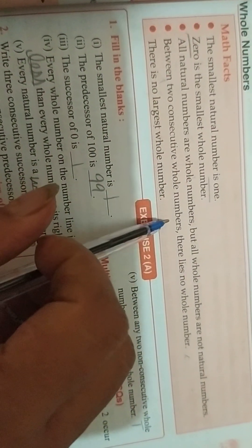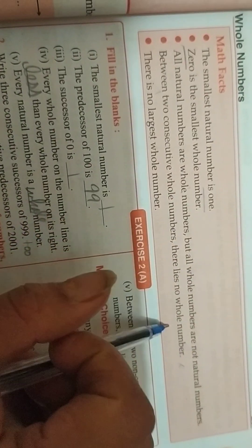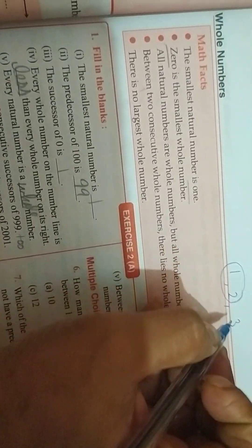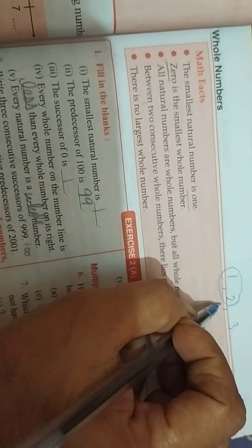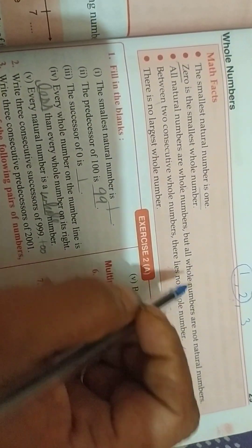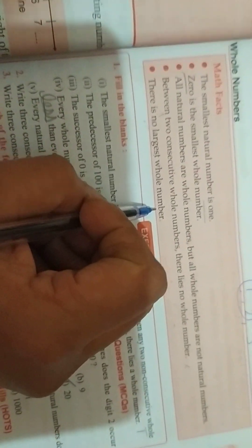But all whole are not natural. Between any 2 consecutive numbers there lies no whole number. It means, suppose we are having 1, 2, 3. So consecutive means which come in continuity. So between 1 and 2 is there any number? No. So there lies no whole number. There is no largest whole number because we can't tell the largest number because they are infinite numbers.